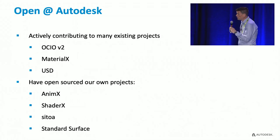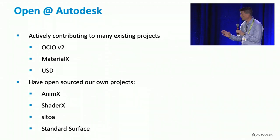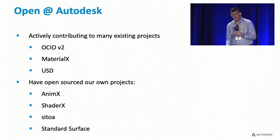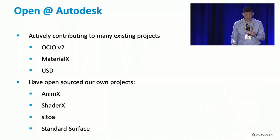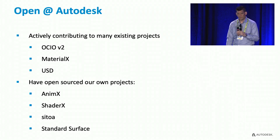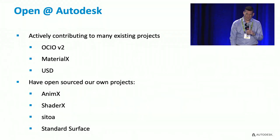In a short amount of time we've contributed to quite a few open source projects: OpenColorIO version 2, MaterialX, USD — and there are a few projects we've open sourced on our own. AnimX allows you to calculate animation curves the way Maya does; a lot of people were always trying to reverse engineer that, and we realized we should just open source it. ShaderX that we've talked about. Softimage to Arnold — we did open source that. And most importantly, Standard Surface, which Ilion is going to come up and talk about.